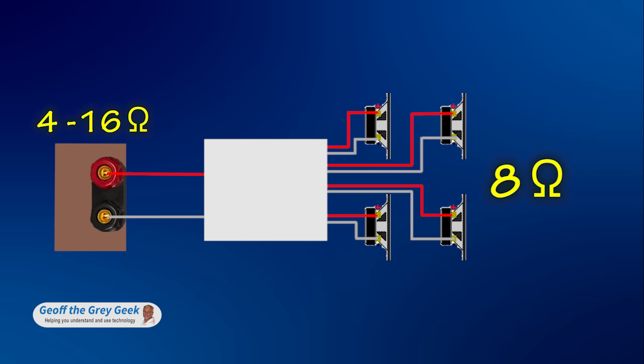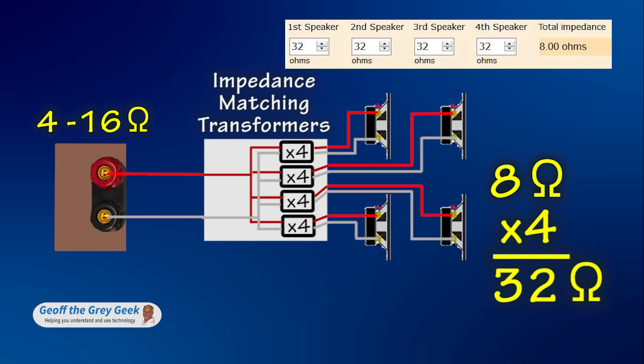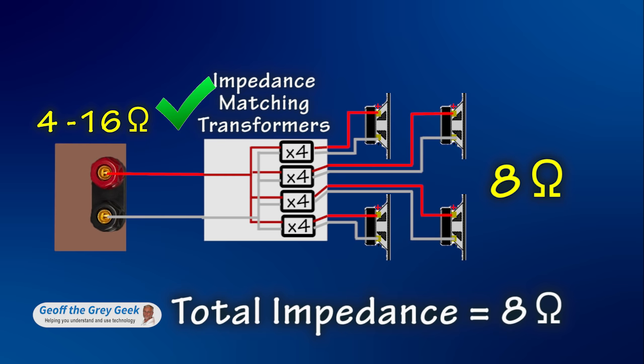The third method of impedance protection uses transformers. A transformer basically multiplies the speaker impedance. If the multiplier is set to times 4, then the impedance of each speaker is multiplied by 4. So with 4 8 ohm speakers, each speaker would appear to have an impedance of 32 ohms. The calculator tells us 4 lots of 32 ohms in parallel equals 8 ohms. All good.